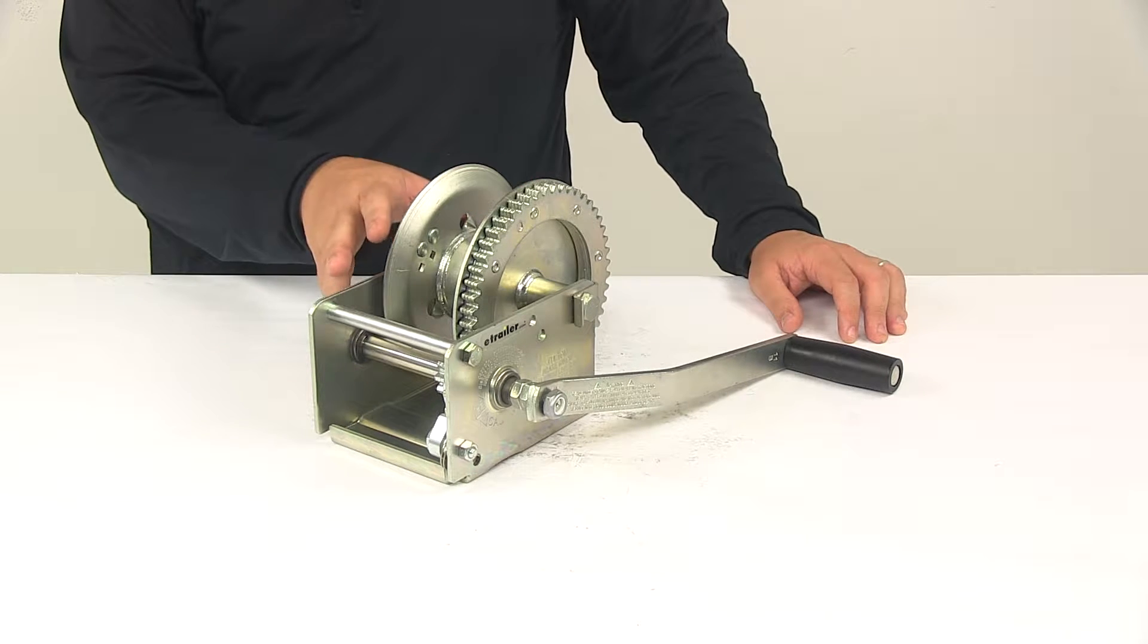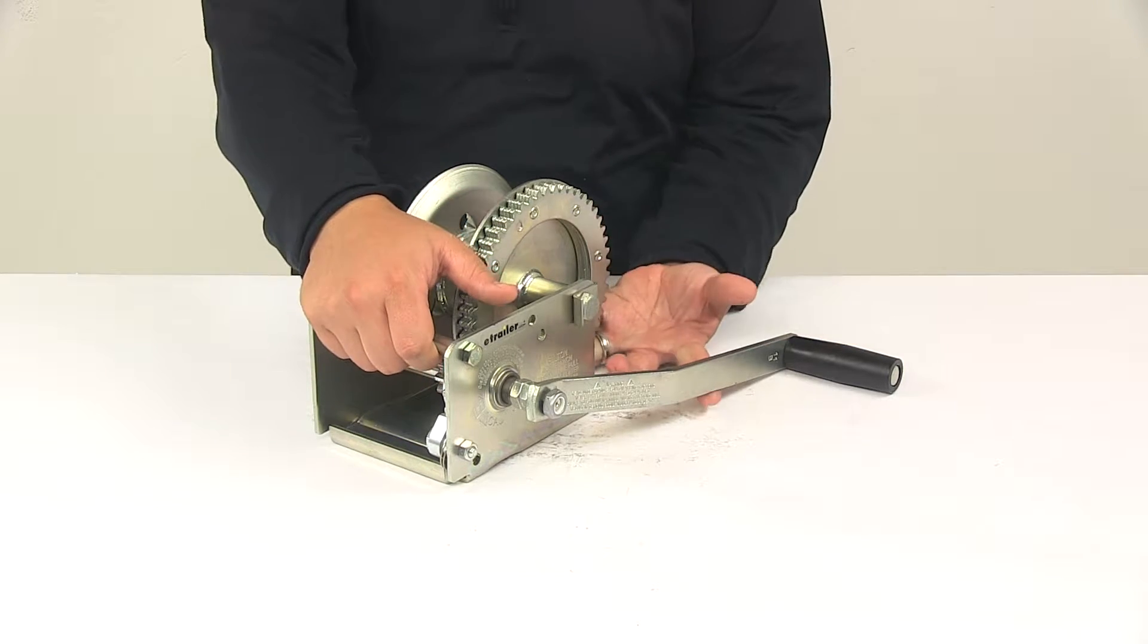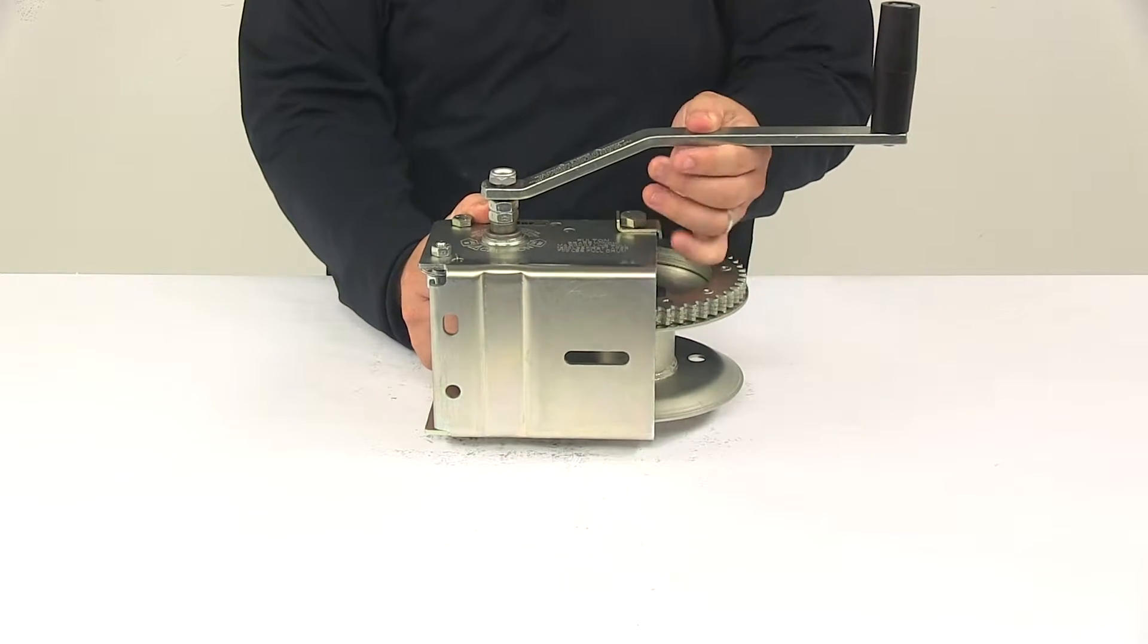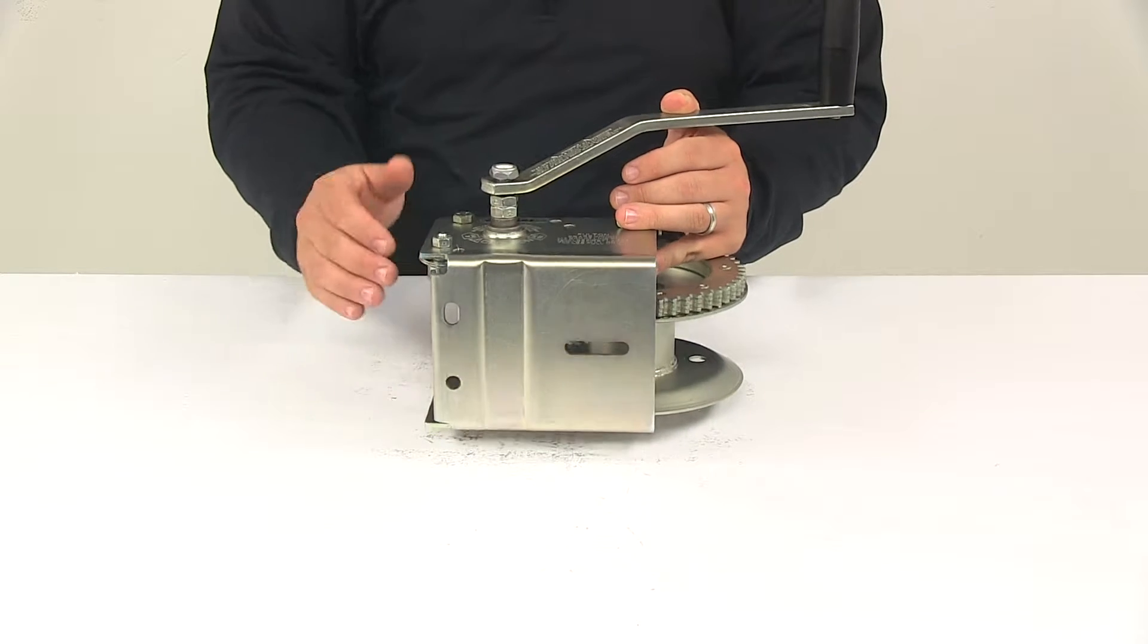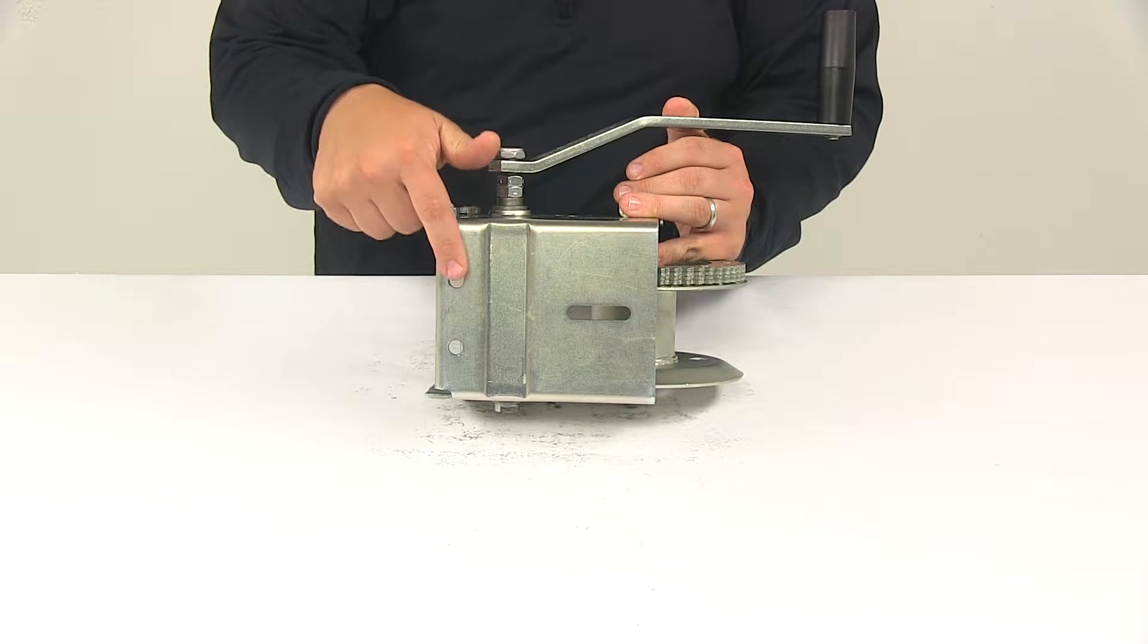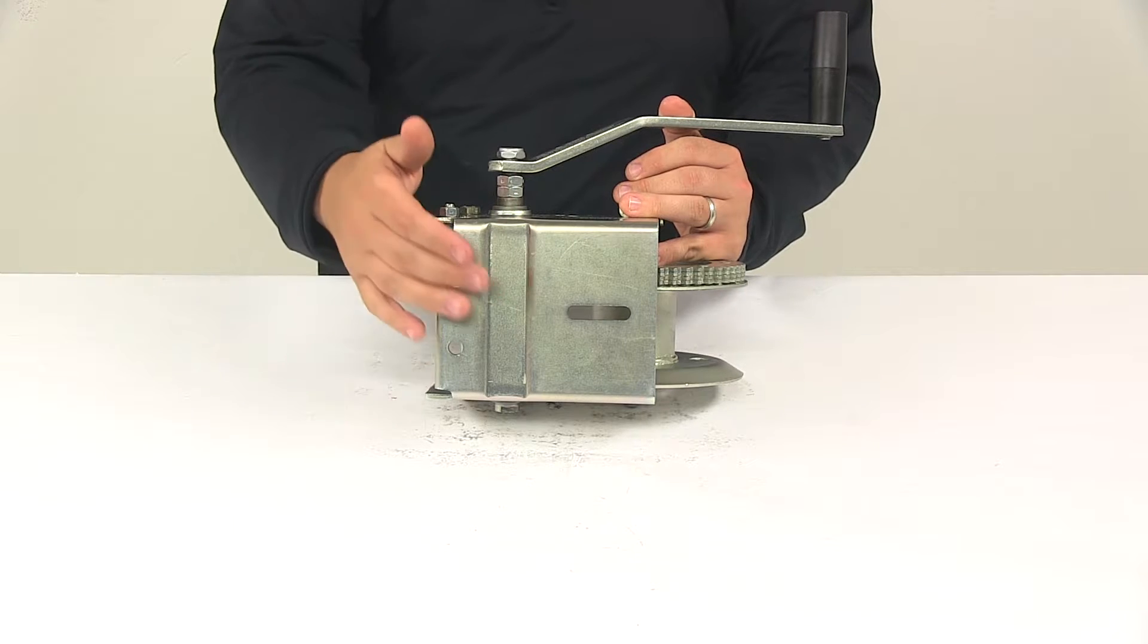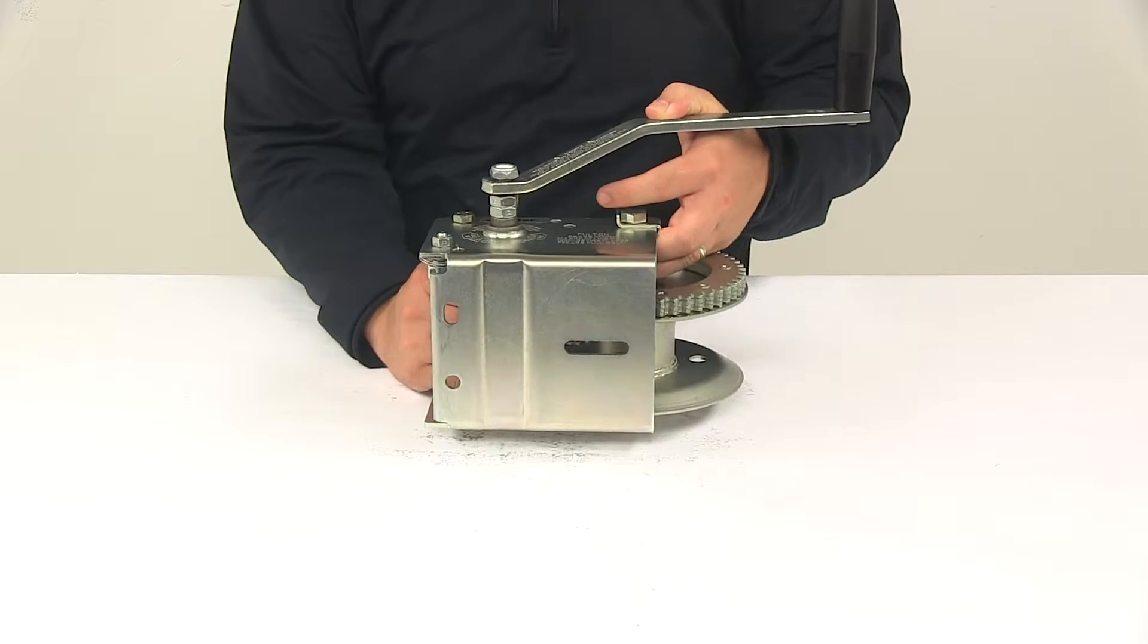This winch will need to be bolted to a suitable mounting area. Mounting hardware is not included, but in the detailed instructions, it does recommend that you use three grade 5, 3⅛ inch diameter bolts. You can see here that you have three spots to get your hardware installed. Some of those holes are elongated, which gives you a little bit more adjustability with the unit and how it mounts.